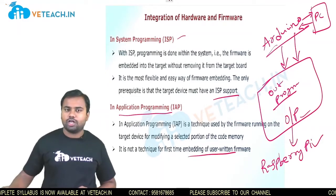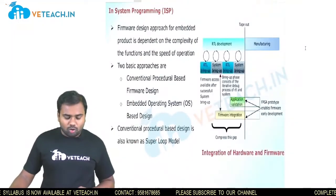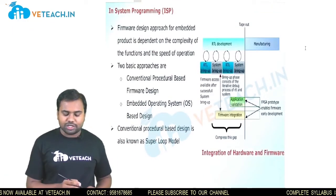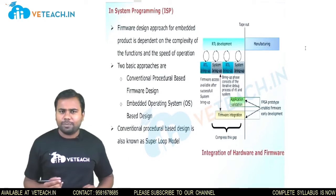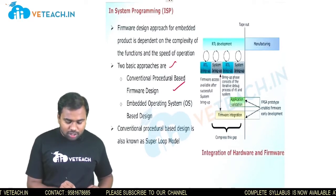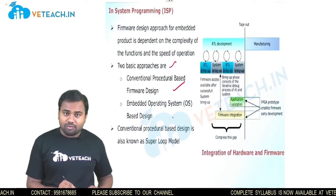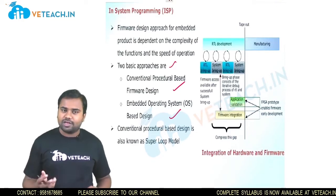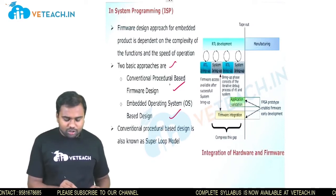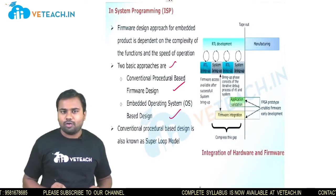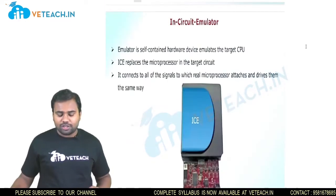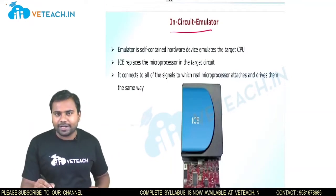Depending on the complexity of functions and speed of operation, there are two types of firmware design approaches: the conventional procedure-based approach (also called the super loop model) and the embedded operating system-based approach. The next concept is the in-circuit emulator. To understand it, we first need to understand what a simulator is.